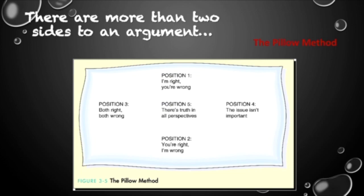And position five being that there's truth in all perspectives, that both of us are 100% right at the same time. It sounds very complicated, but in reality, it is very much possible to say that we can both be 100% right.